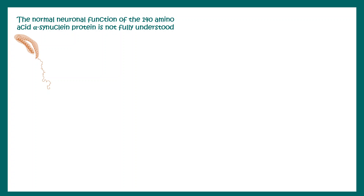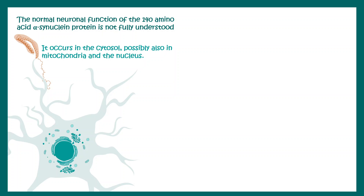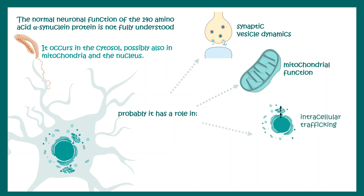Normally, alpha-synuclein protein is really important. Though its function is not fully understood, this protein is found in different cell types including neurons throughout the brain. It occurs in the cytosol, possibly also in mitochondria and the nucleus. This protein is reported to be involved in synaptic vesicle dynamics, mitochondrial function, intracellular trafficking, and it might have chaperone-like activity.